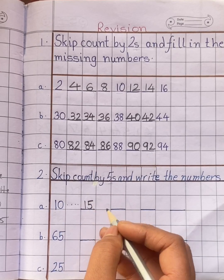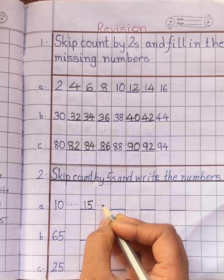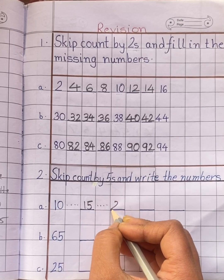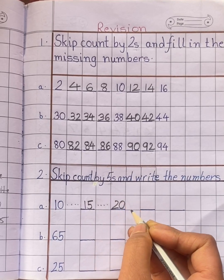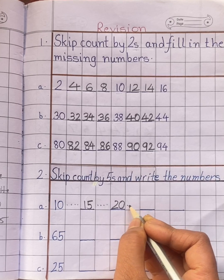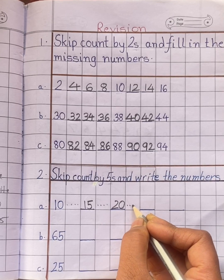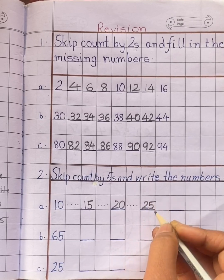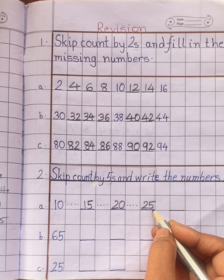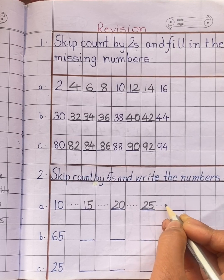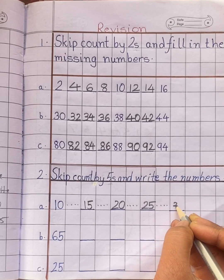After 15, skip four numbers: 16, 17, 18, 19. Write down 20. After 20, skip four numbers: 21, 22, 23, 24. Write down 25. After 25, skip four numbers: 26, 27, 28, 29. Write down 30.